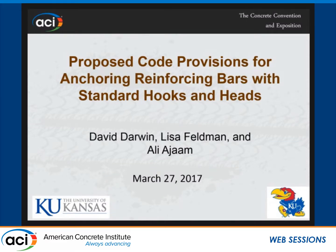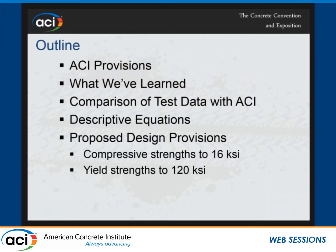So we talked earlier this morning — Jane Sperry talked about the research at KU on hook bars. I talked about headed bars. And now we want to talk about the proposed code provisions. I want to say that this is a moving object. If you ever work with ACI committee 318, you shove in one thing and something else pops out the other side. So this is what it looks like today. It may not look like this tomorrow. I want to talk about the ACI provisions as they exist, just to give something to hang your hats on. Then we'll talk about what we learned — summaries of what we had earlier this morning — and a very brief comparison with ACI test data. Talk about the descriptive equations and then the proposed provisions.